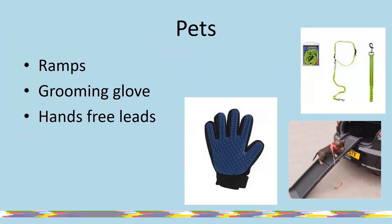For pets, you can get hands-free leads — if you're worried about being able to grip onto a lead, you can get ones that adjust around your wrist or attach to a wheelchair or walker. If you struggle with grooming, there are grooming gloves — you just put it on and stroke through to groom animals as you go. Pet ramps can help if you have a smaller pet that struggles to get up onto higher places but you may not be able to stoop and pick them up.